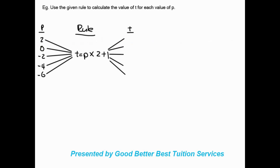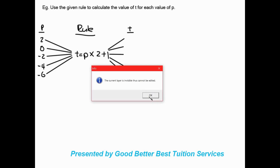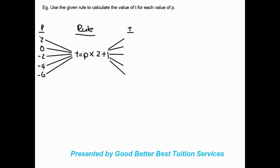Let's look at the first example. It says: use the given rule to calculate the value of t for each value of p. All the values on the left-hand side are our input values under p, and on the right-hand side are our output values under t. In the middle is our rule: t is equal to p times 2 plus 1.